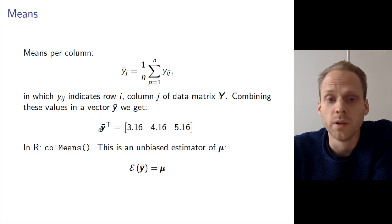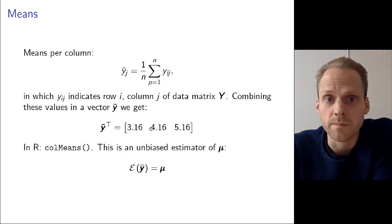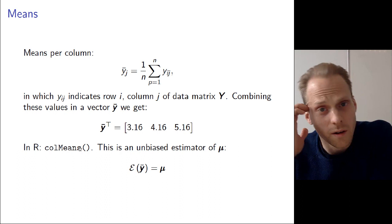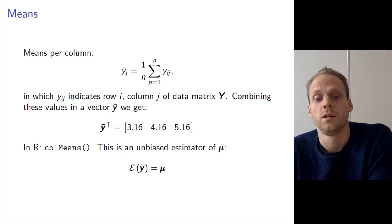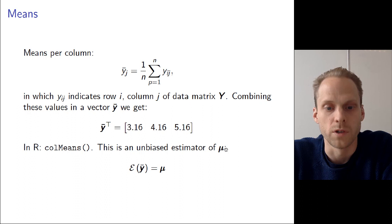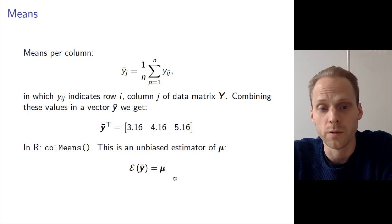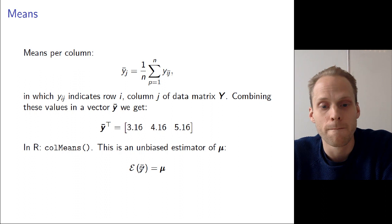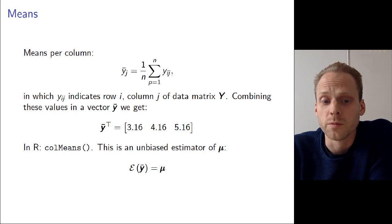If you know about mathematical statistics, this estimator is what's called an unbiased estimator for the mean mu, which means the expected value of this sample mean equals mu. That is not very important for SEM 1, but I'll come back to expectation algebra in SEM 2, and then you will understand more what this means.